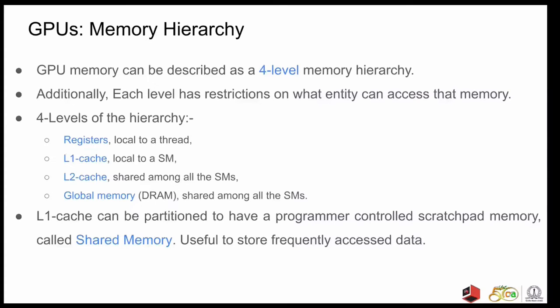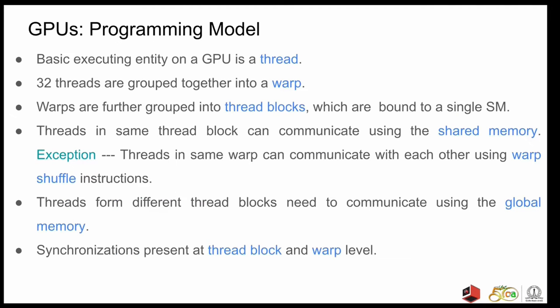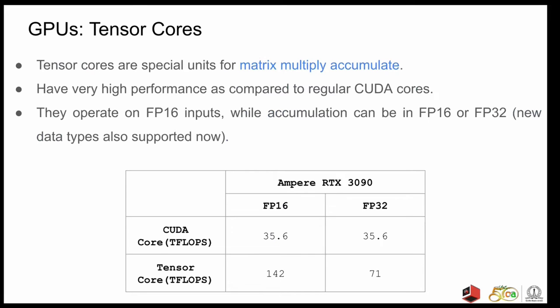The programming model on GPU consists of the basic executing entity that is a thread. 32 threads are grouped together into a warp and is the basic scheduling entity on an SM. Warps are further grouped into thread blocks and each thread block is bound to a single SM during its entire lifetime. Threads in the same thread block can communicate using the shared memory. With an exception, the threads in the same warp can communicate with each other using warp shuffle instructions. Threads from different thread blocks need to communicate using the global memory. Synchronization barriers in GPUs are present at the thread block and at the warp level.